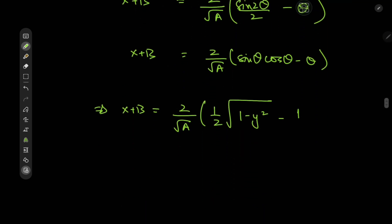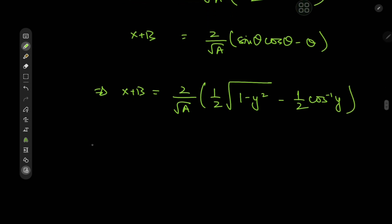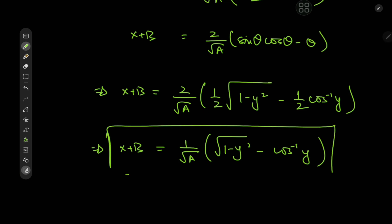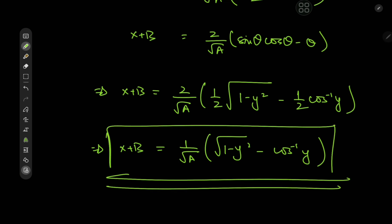We have one half inverse cosine of y and the factor of 2 outside cancels, so this implies x plus B equals 1/root(A) times (root(1 minus y²) minus inverse cosine of y), which is a pretty nice looking solution. I hope you enjoyed the video — be sure to like and subscribe, follow me on Instagram, and if you enjoy the channel you can support the content on Patreon. Thank you, see you next time.